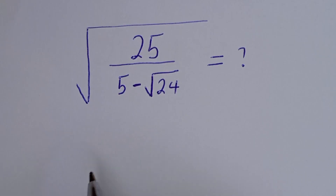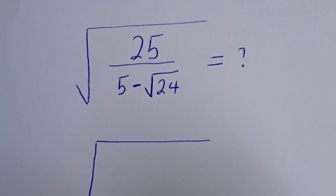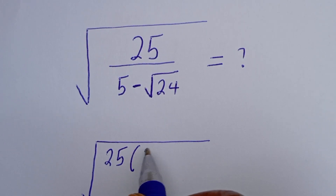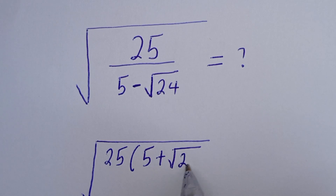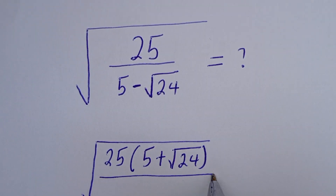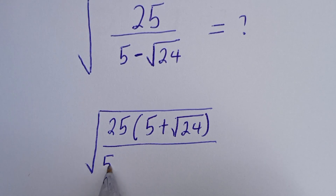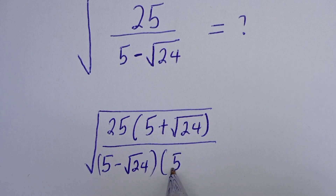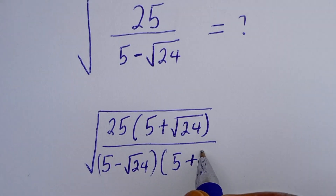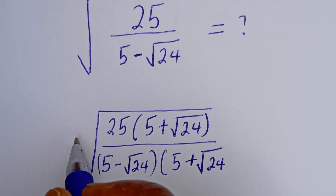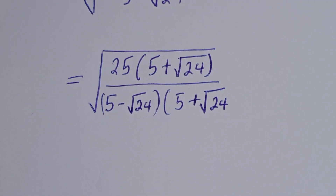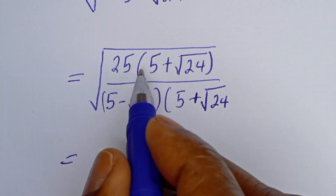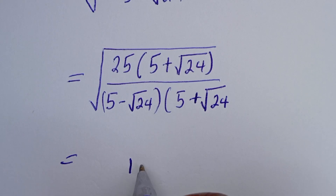That is, we have square root of 25 multiplied by the conjugate, which is 5 plus square root of 24, then divided by 5 minus square root of 24 multiplied by 5 plus square root of 24. This is equal to: 25 times 5 is 125, then plus 25 times root 24, that is 25 root 24.